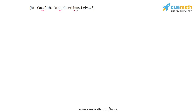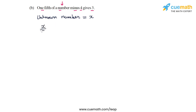Part b says: 1/5th of a number minus 4 gives 3. Again we have some unknown number. Let's assume it is x. One fifth of x can be written as x by 5, and if we subtract 4 from that the result should equal 3.